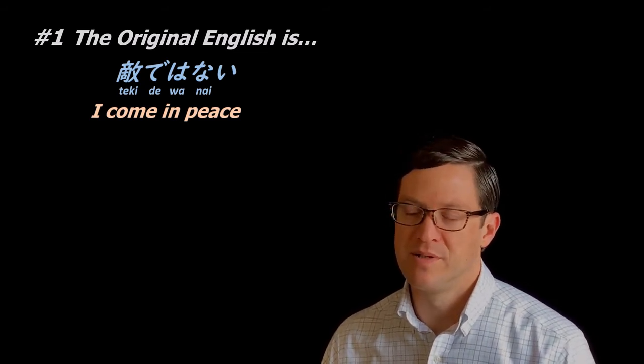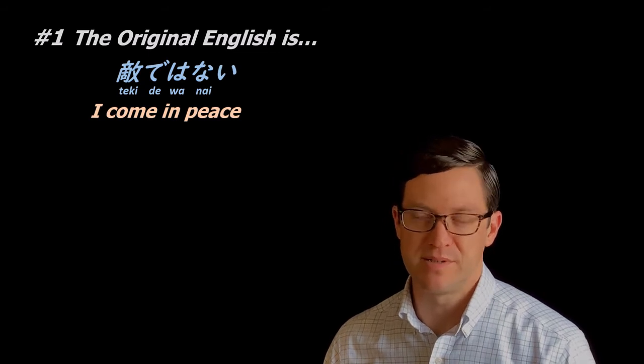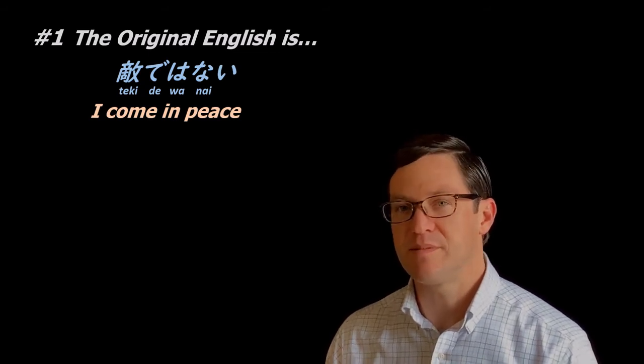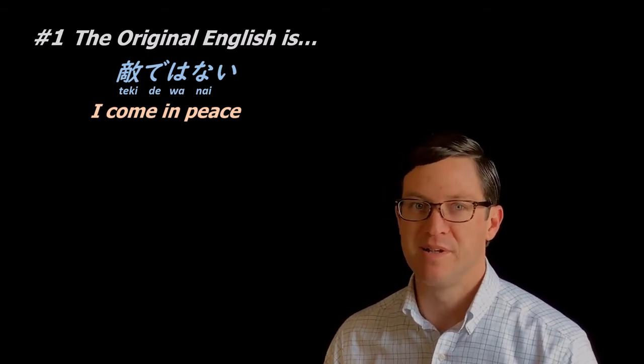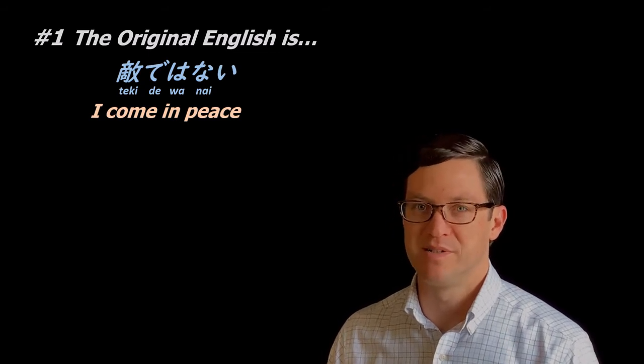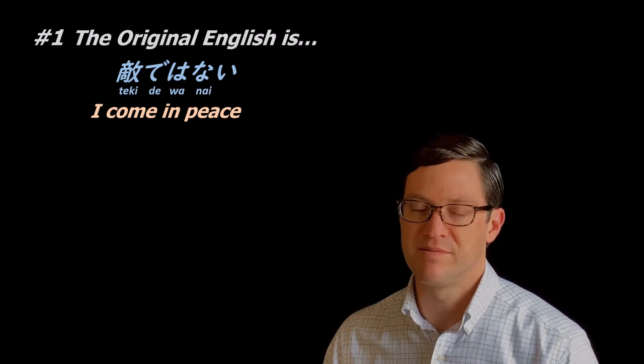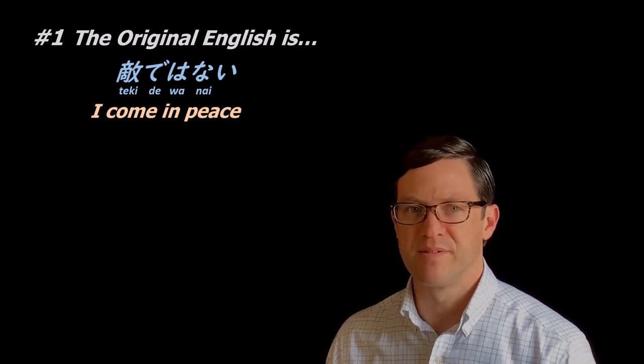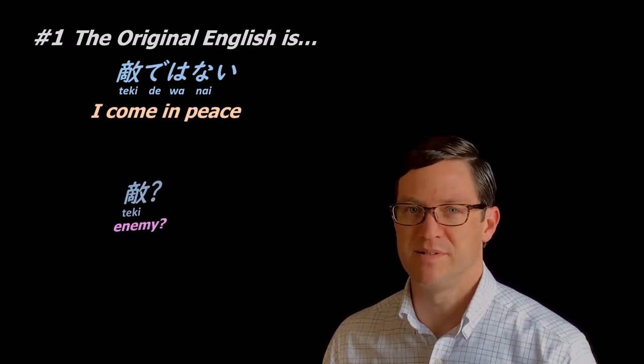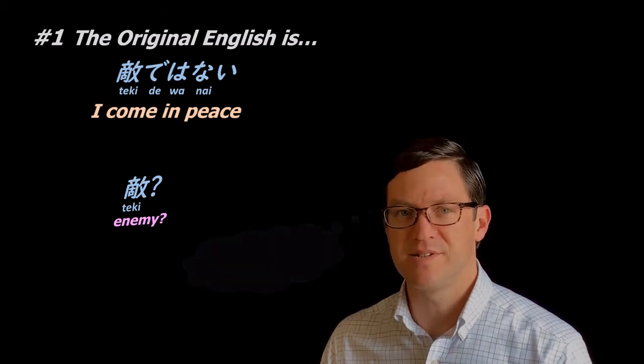As a native English speaker, I often feel that Japanese is a little vague, and in my native English speaking brain, when I hear this expression, teki de wa nai, I feel a little confused, and I have some questions. Why are you talking about enemies? Are we enemies?